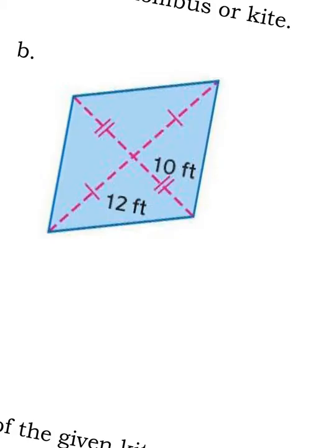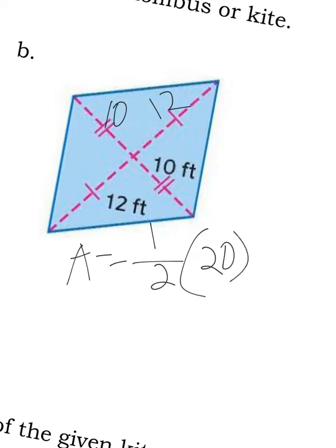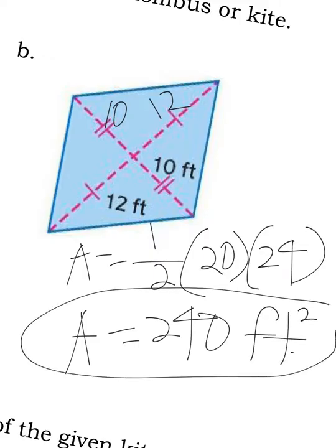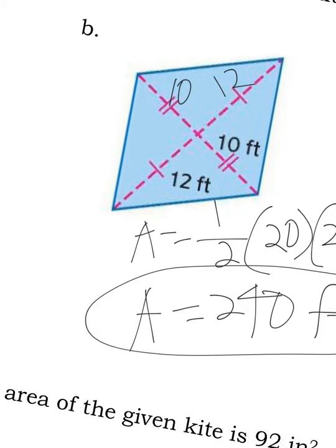Since I'm talking about it, I might as well just do this one first. If that's 10, then that's 10. If this is 12, then that's 12. So my area is one half of—well, 10 plus 10 is 20, and 12 plus 12 is 24. So this area is 240 square feet. Remember to square your units.